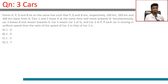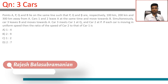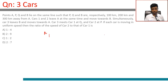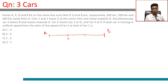Three cars — points A, P, Q, and B — lie on the same straight line such that P, Q, and B are respectively 100 kilometers, 200 kilometers, and 300 kilometers away from A. So A is here, B is furthest away at 300 kilometers, and P and Q are in the middle. P is 100 kilometers from A, Q is 200 kilometers from A, and B is 300 kilometers from A, each segment being 100 kilometers apart.